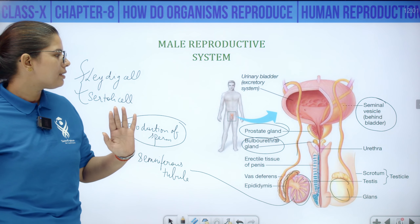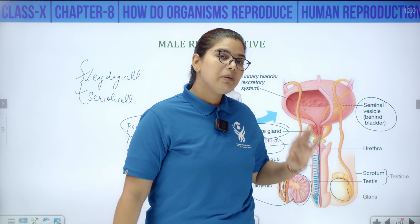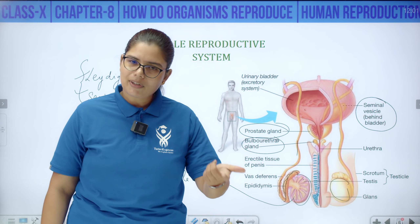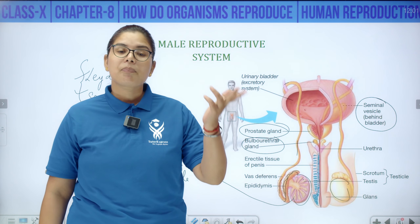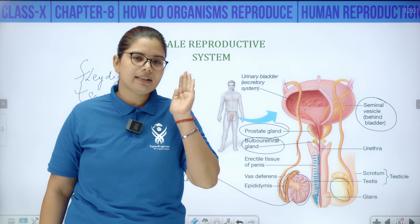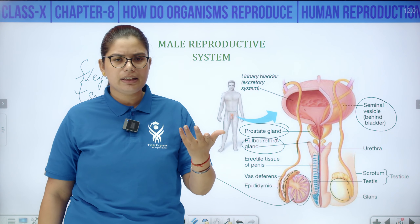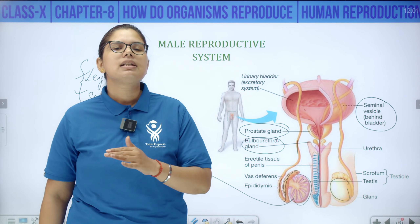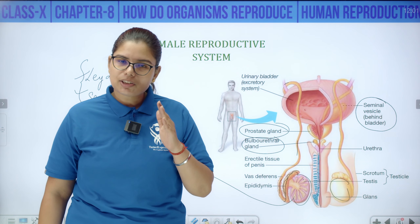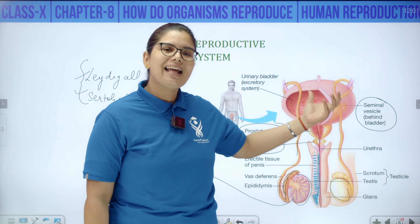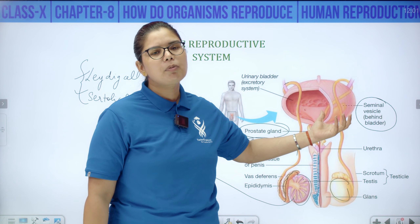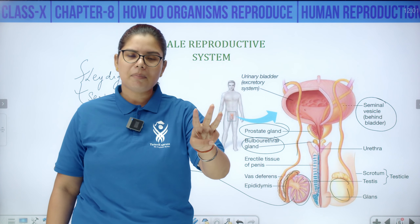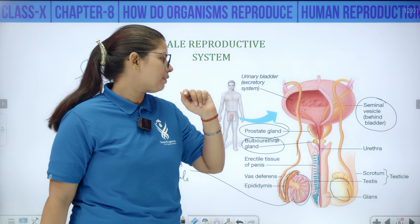This is all about the male reproductive system. In board exams, labeling can be asked. The function of epididymis can be asked. What do the male accessory glands do — they produce a secretion to nourish the sperm. The three accessory glands of the male reproductive system are: seminal vesicle, prostate gland, and bulbo-urethral gland.